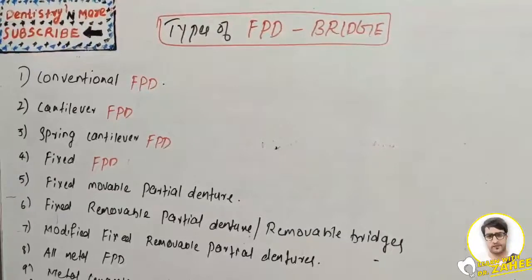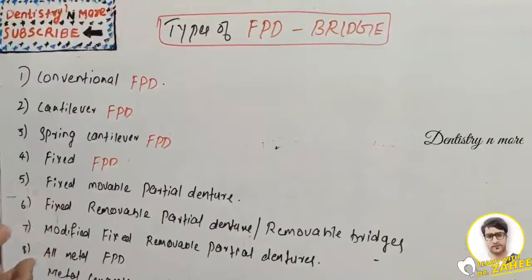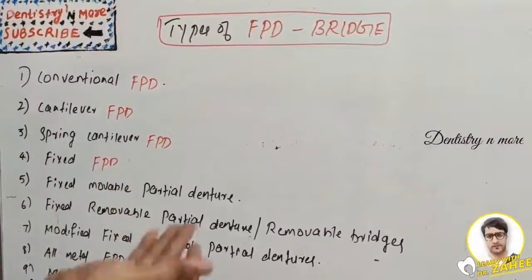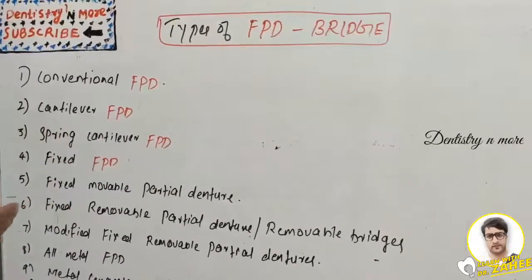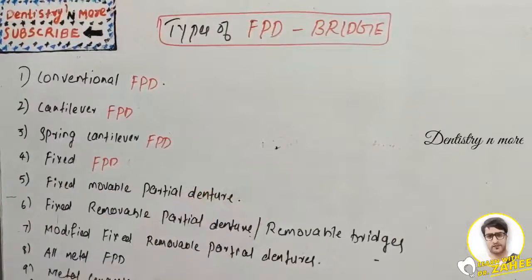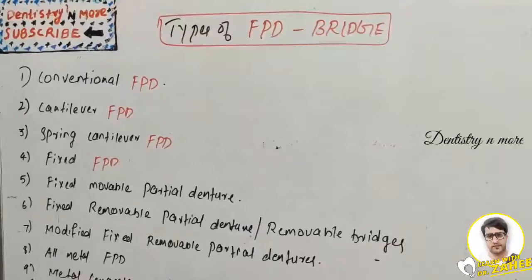There are various types of fixed partial denture or bridge: conventional bridge, cantilever bridge, spring cantilever, fixed-fixed partial denture, fixed-movable partial denture, fixed-removable partial denture or removable bridges, modified fixed-removable partial denture, all metal, metal-ceramic, and all ceramic.